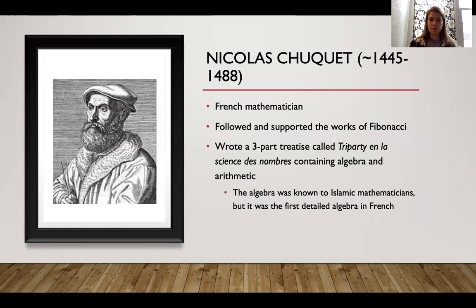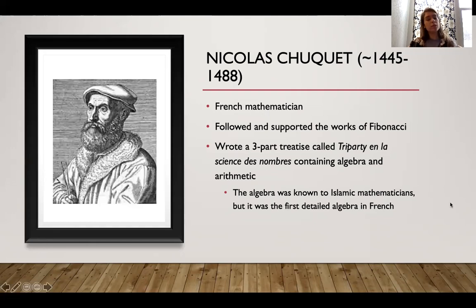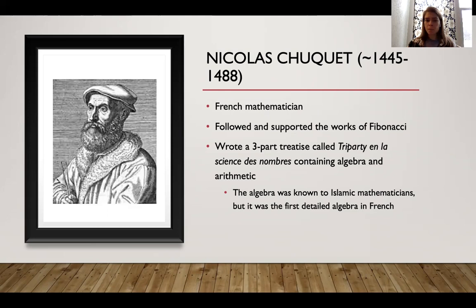Looking at a specific mathematician in France, we have Nicolas Chouquet. He was born around 1445 and definitely lived until 1488. He was a French mathematician who supported and followed the works of Fibonacci. He was most famous for writing a three-part treatise called Triparty en la Science des Nombres, which contains algebra and arithmetic problems in three parts — hence Triparty, coming from the Italian parte meaning part, and tri meaning three. The algebra in the book was already known to Islamic mathematicians, but it was the first detailed algebra written in French, giving the French people something they could read and learn algebra from.